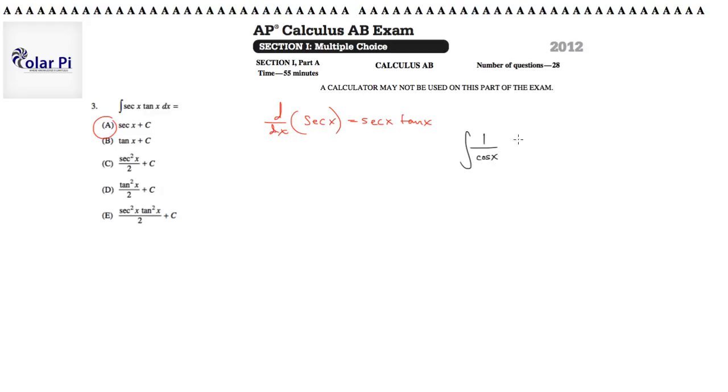You could write 1 over cosine x in place of secant. And then, hopefully you also remember that tangent is sine x over cosine x. These are definitions that you have to memorize at some point, so you should know these.